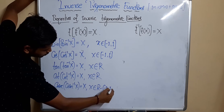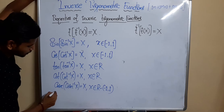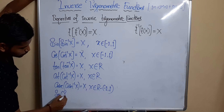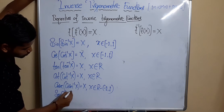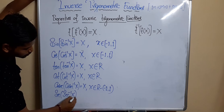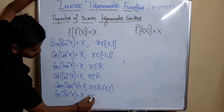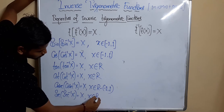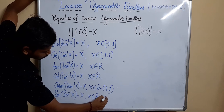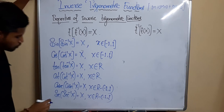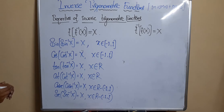For cosec: cosec(cosec⁻¹(x)) = x, where x belongs to the real number system excluding (-1, +1). And sec(sec⁻¹(x)) = x, where x belongs to the real number system excluding (-1, +1). Please make note of all these.